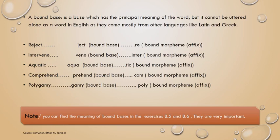Bound bases, in fact, are morphemes that come from other languages like Latin, Greek, French, etc. They are borrowed from other languages into English, and they were free morphemes in those languages. But when they are borrowed into English, they became bound morphemes — they are not words in English, that is why they cannot stand alone with meaning. Still, they have meaning when we attach some other morphemes to them.